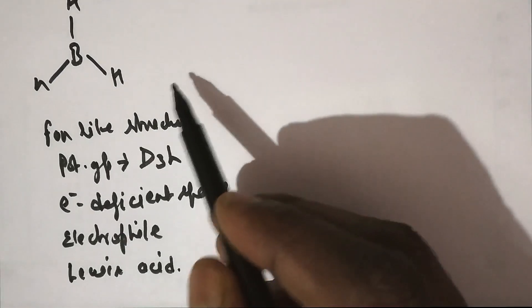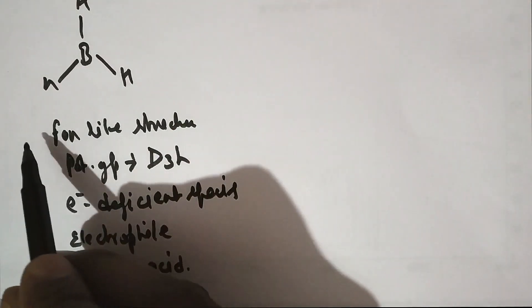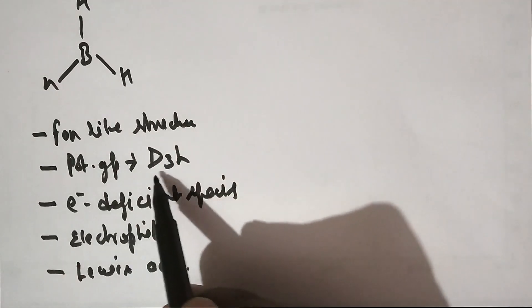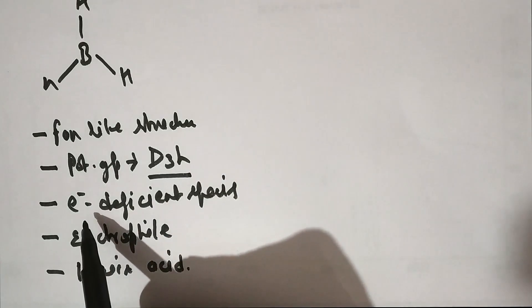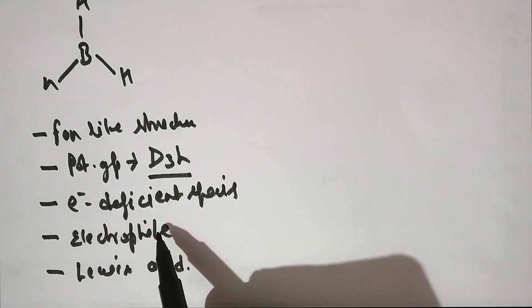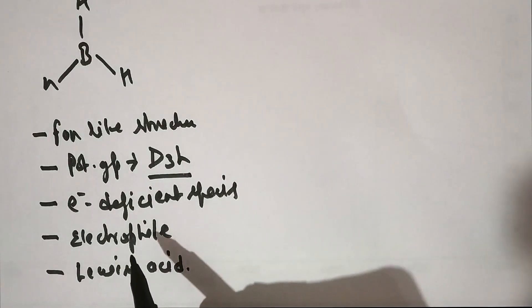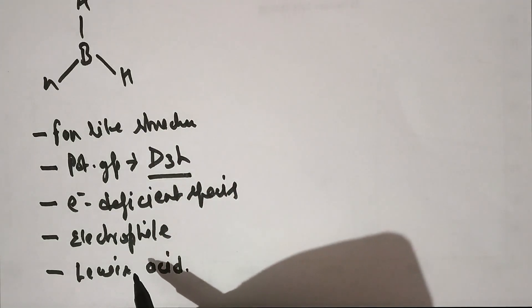If we have a simple structure like BH3, these are the basic properties it has: its structure is planar, its point group is D3h, it is an electron-deficient molecule, and so it will act as an electrophile. All these types of molecules come under the category of Lewis acids because of their electron-deficient nature.